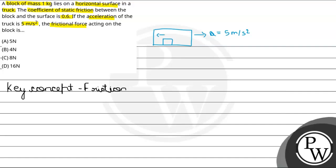So, this block will experience the force F in backward direction. And so, friction force will be in forward direction. So, this friction force we write as Fs, static friction.